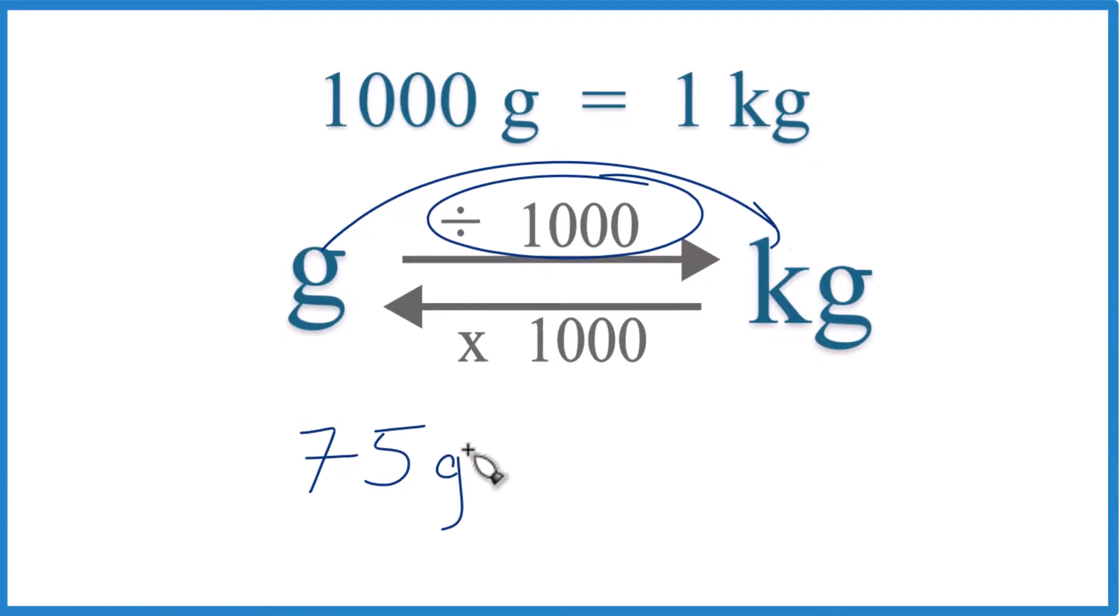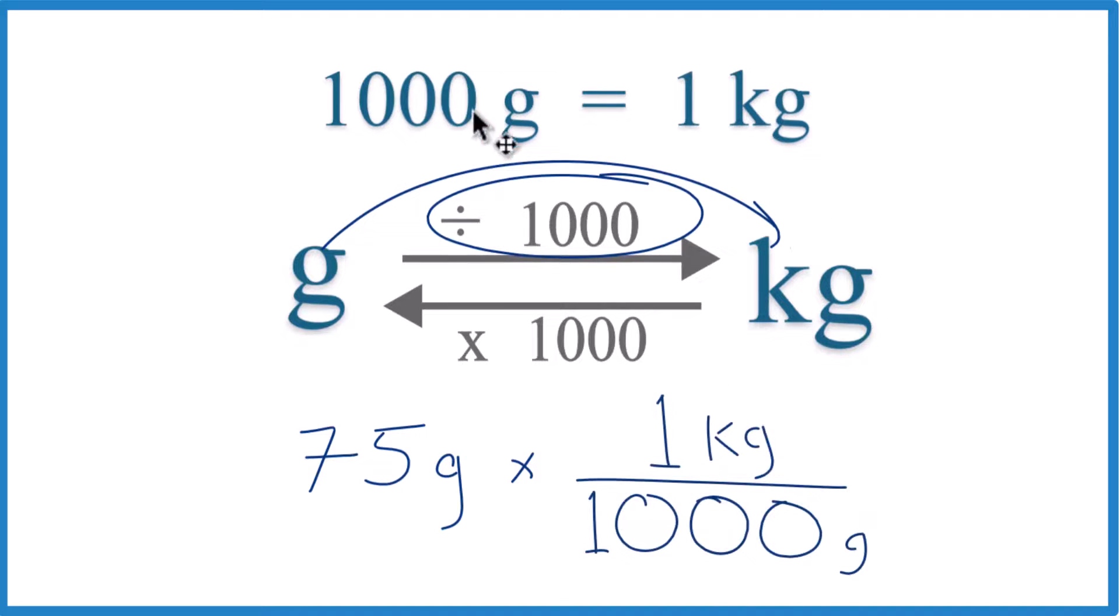Here's how you do that. We take our 75 grams, and then we're gonna multiply it by a conversion factor. And we want grams on the bottom so that the grams will cancel out. So one kilogram is 1,000 grams. One kilogram over 1,000 grams.